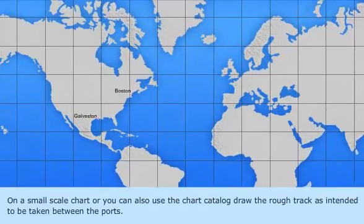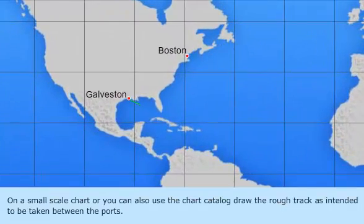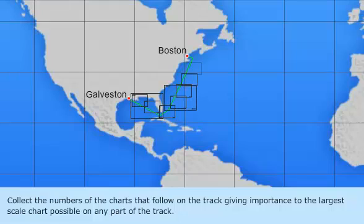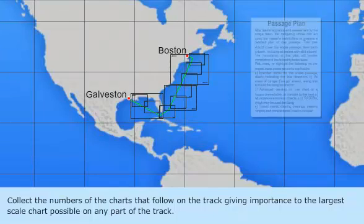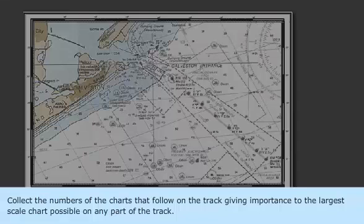On a small scale chart, or you can also use the chart catalog, draw the rough track that is intended to be taken between the ports. Collect the numbers of the charts that fall on the track, giving importance to the largest scale chart possible on any part of the track.